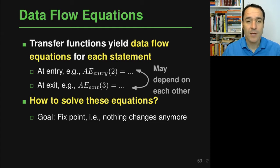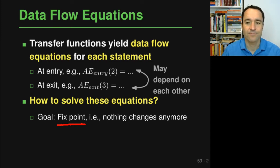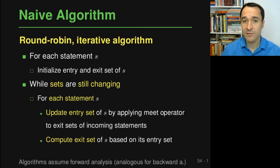The goal of solving these equations is to reach a fixed point, which means that nothing changes anymore. We substitute one equation into another long enough until nothing changes, and this point is called a fixed point. Once we've reached it, we have solved the equations. We'll start by looking at a naive algorithm which is correct but not very efficient, and then look at a more efficient algorithm.